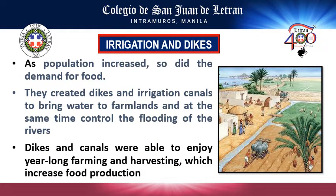Sumerians invented irrigation and dikes to increase mass production of food. They also built these to bring water to farmland and to control flooding. This was invented for the purpose of mass production in terms of food supply.